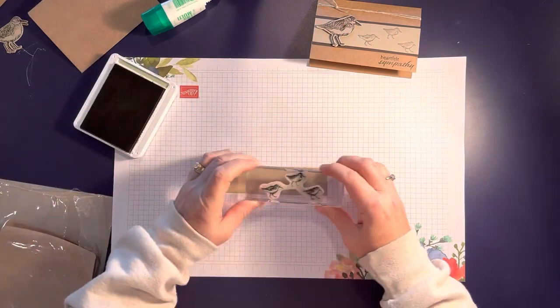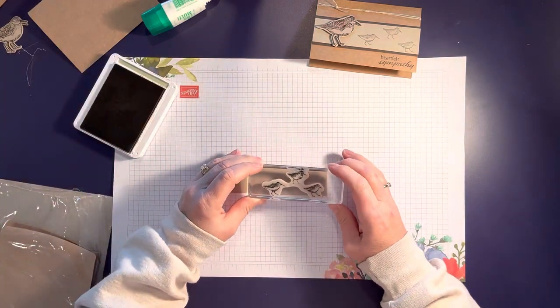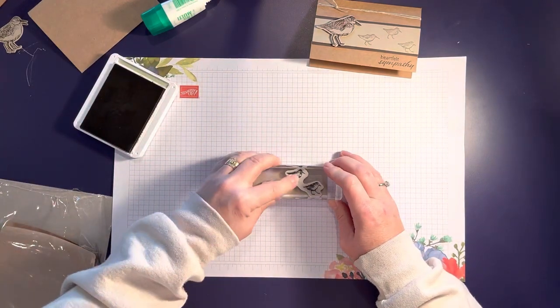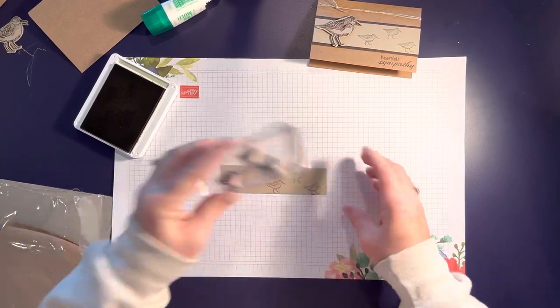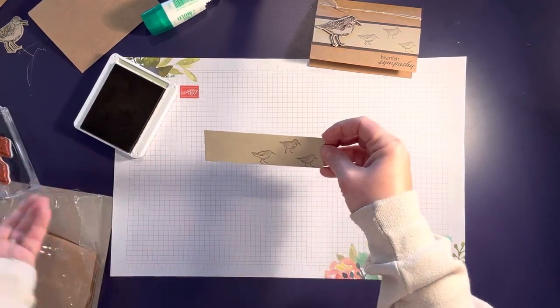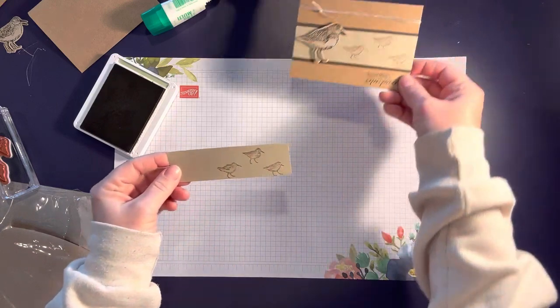I'm going to use our crumb cake ink with the stamp image of the three birds. I made this strip quite small—it's kind of an odd dimension. I did one and three-eighths just because I wanted it to fit just on this little strip here so it didn't take too much of the card front.